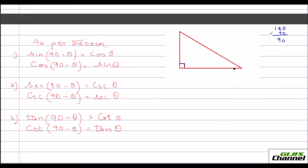Let me take one angle as theta, since we don't know what the angle is. If one angle is theta, the other angle would be 90 minus theta, because the total of these two angles must sum to 90 degrees. Now let me name the triangle: the hypotenuse side is C, this side is A, and this one is B.